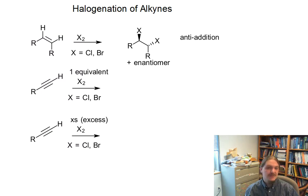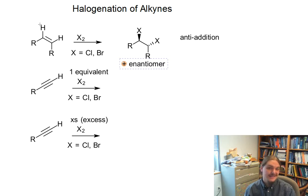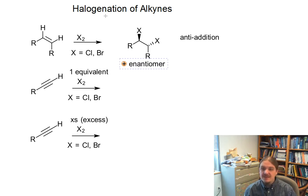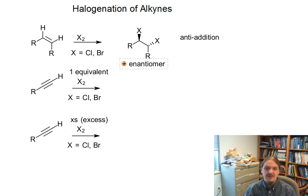This molecule is chiral, but the reactant is not, so the enantiomer of this structure is also formed. The reason that you get this anti-addition, if you remember, is because we have this really interesting three-membered ring transition state.